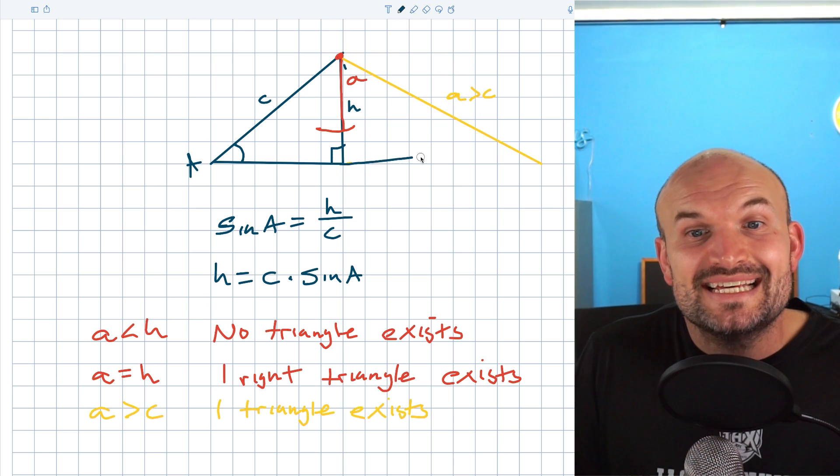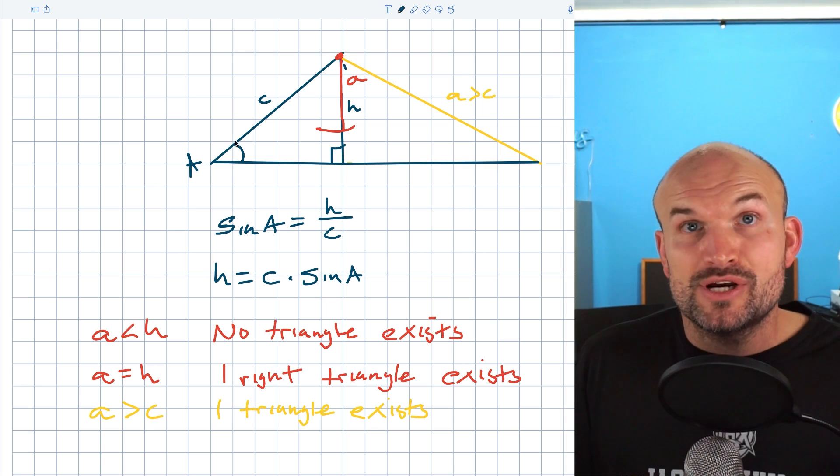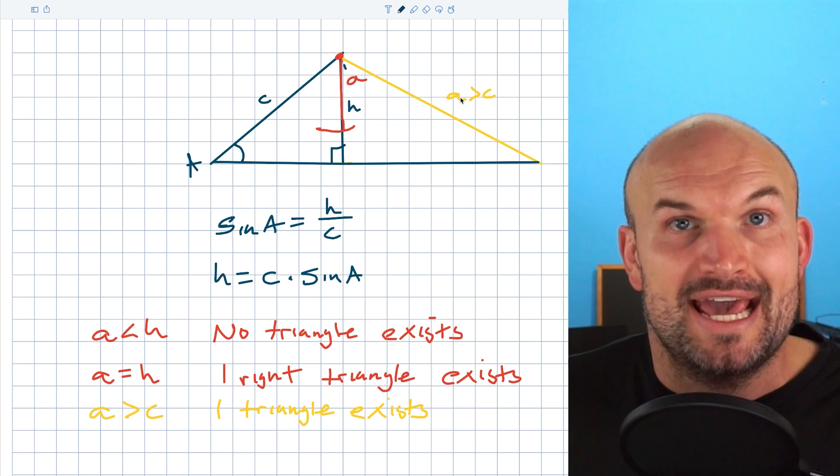Now, one thing I can do is I can just extend this side because again, remember guys, we don't know what the length of that side is. The only thing we are given is going to be our angle A, our side length C, and our side length A.